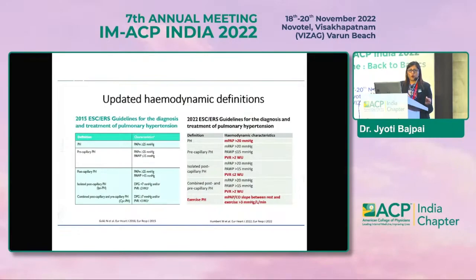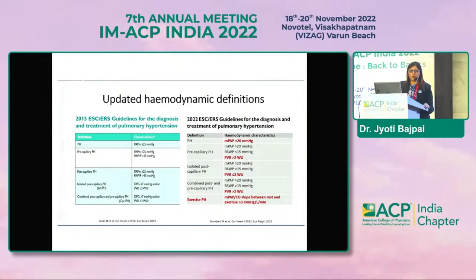Pulmonary vascular resistance criteria also changed — initially more than 3 Wood units, now more than 2 Wood units. PH is now defined as mean pulmonary artery pressure >20 mmHg. Precapillary PH: mean PAP >20 mmHg, pulmonary artery wedge pressure ≤15 mmHg, and PVR >2 Wood units. Post-capillary PH (isolated, due to left heart disease): same PAP criterion but pulmonary artery wedge pressure >15 mmHg. Exercise-field definition is also included in the new guideline.